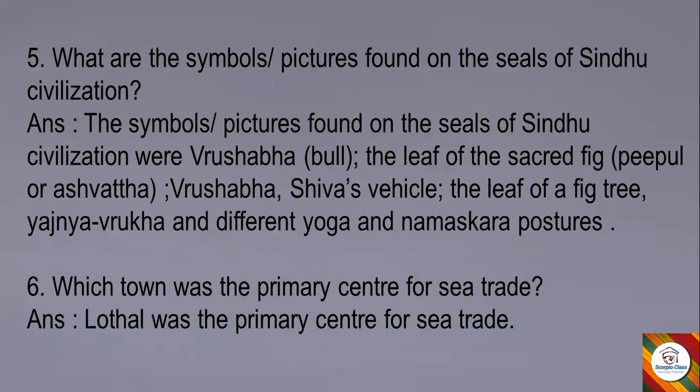Fifth question: What are the symbols or pictures found on the seals of Sindhu civilization? Answer: Vrishabha (that is bull), the leaf of the sacred fig tree (Peepal or Ashwatha), Vrishabha as Shiva's vehicle, the leaf of a fig tree (that is Yajna Vruksha) and different yoga and Namaskara postures. These were the symbols found on the seals of Sindhu civilization. Question 6: Which town was the primary center for sea trade? Answer: Lothal was the primary center for sea trade.